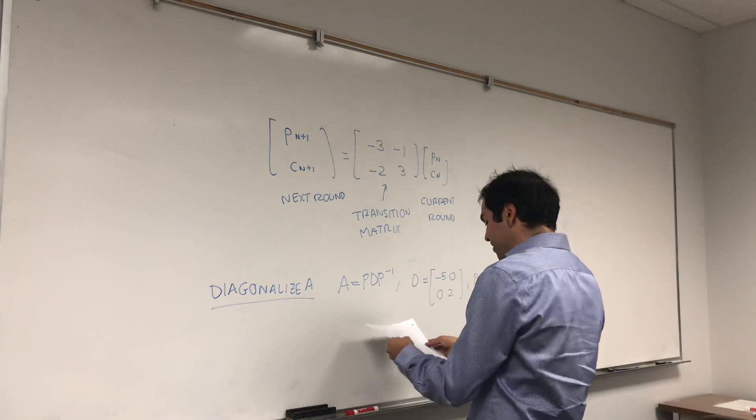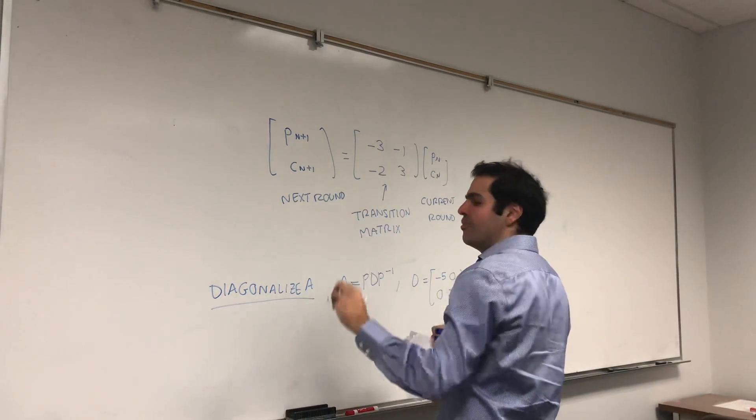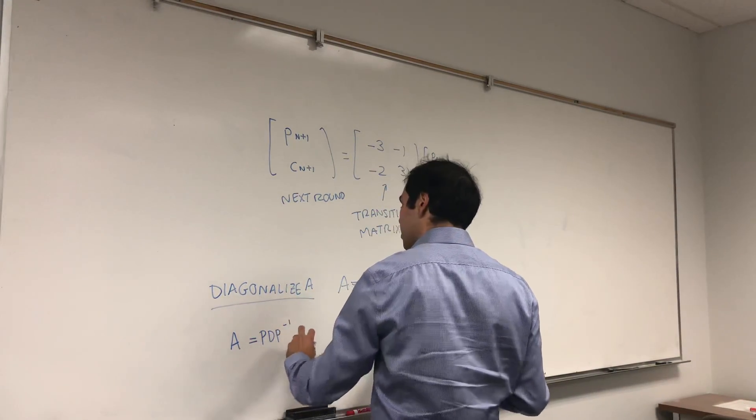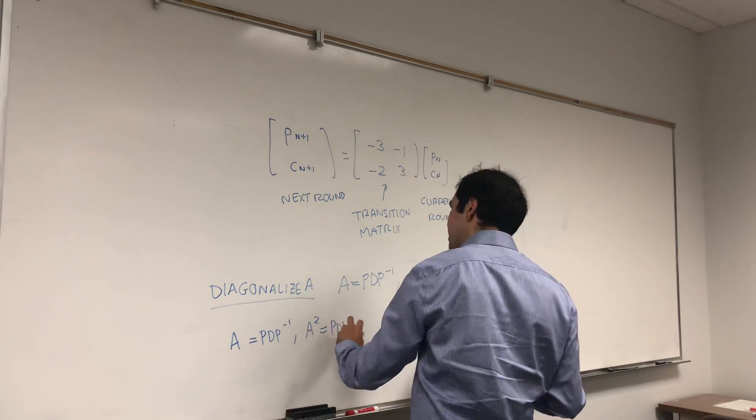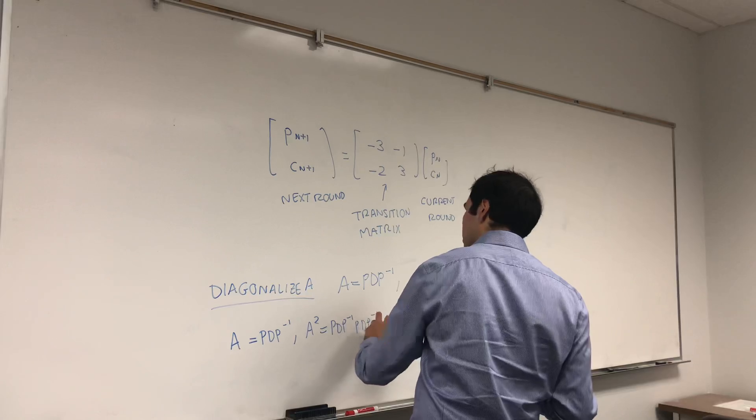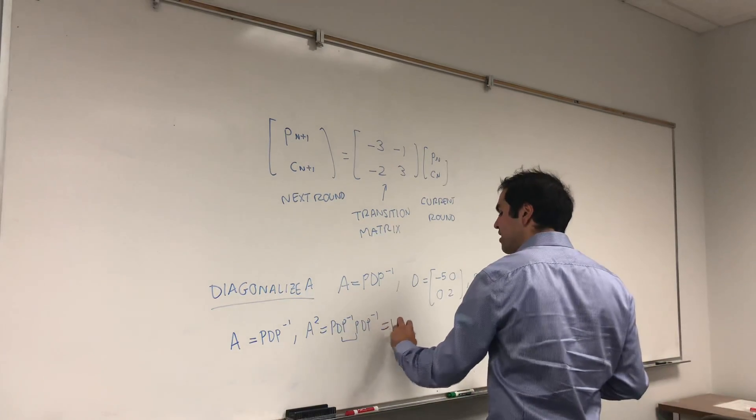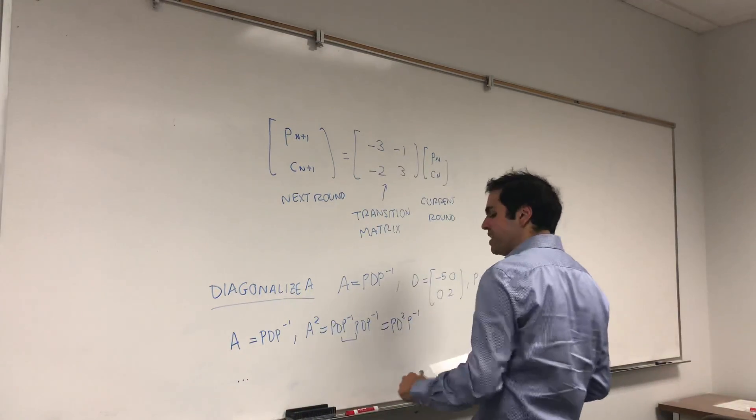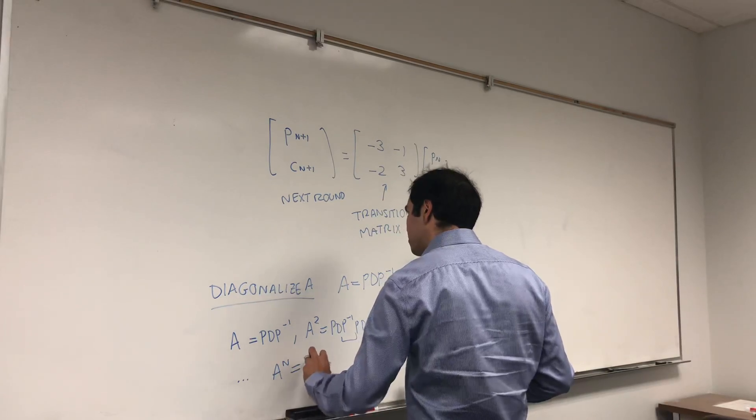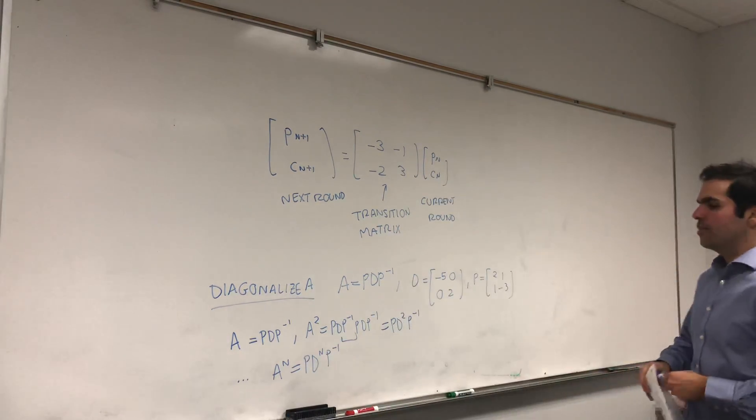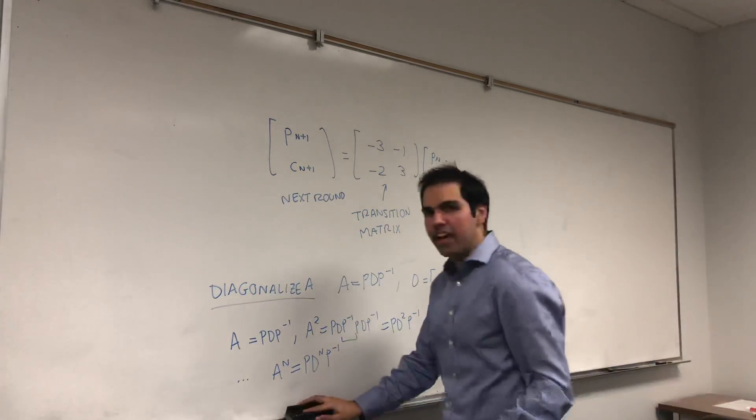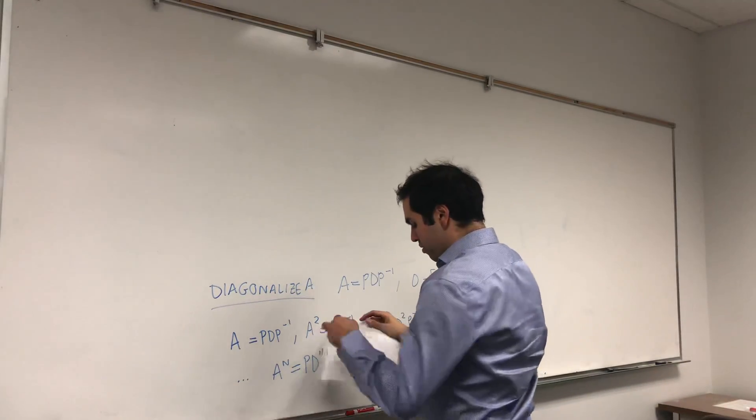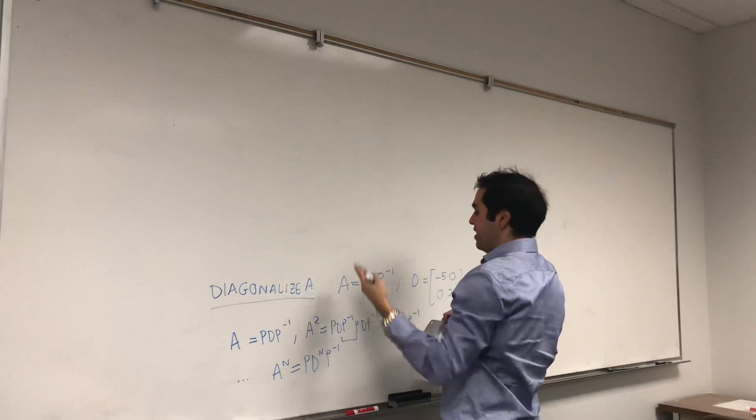Second thing is, we want to find A to the N. And I'll explain you in a second why this is useful. So, you see, if A is PDP inverse, then A squared is PDP inverse, PDP inverse. This becomes the identity matrix, and you're left with PD squared P inverse. And so, in particular, A squared is PD squared P inverse. A to the N is PD to the N P inverse.